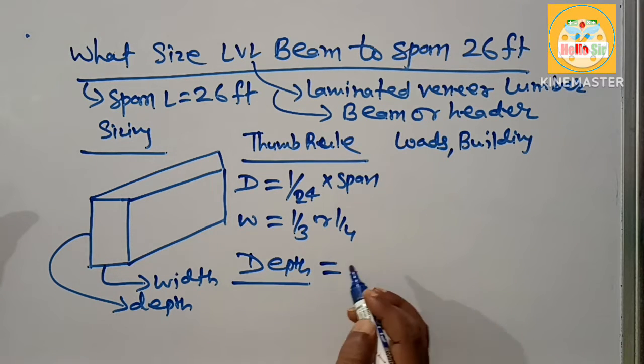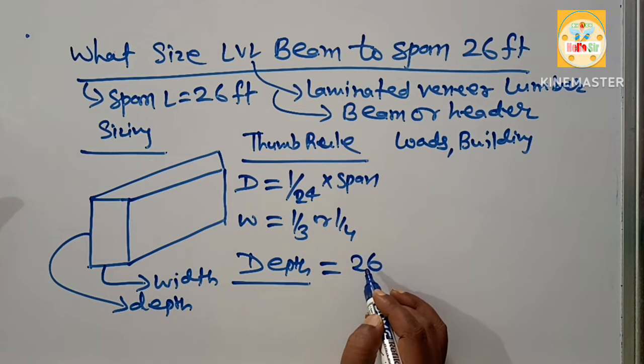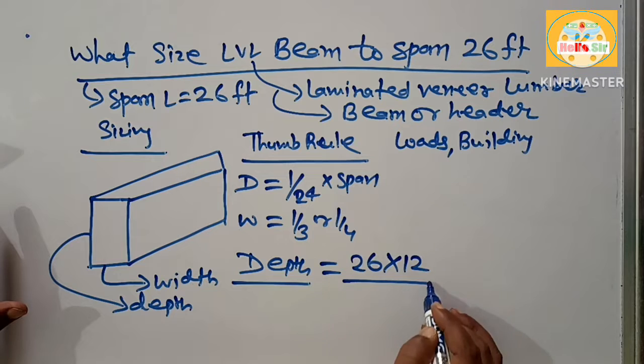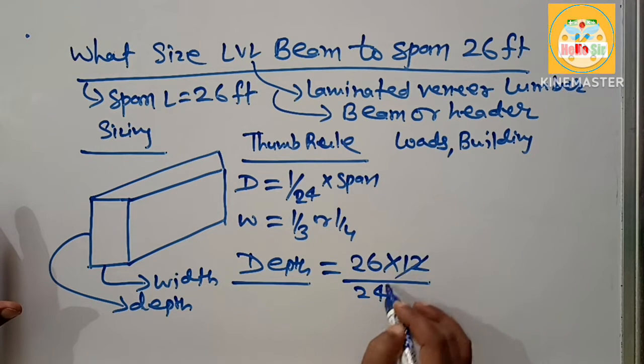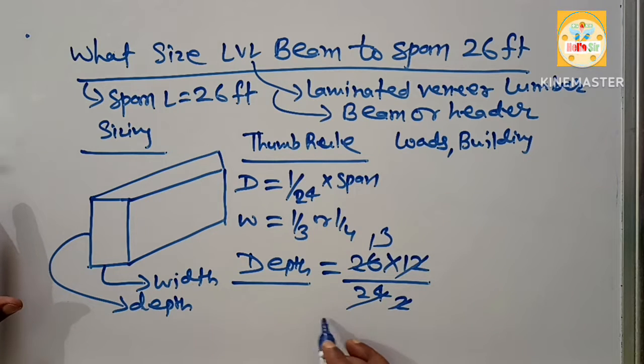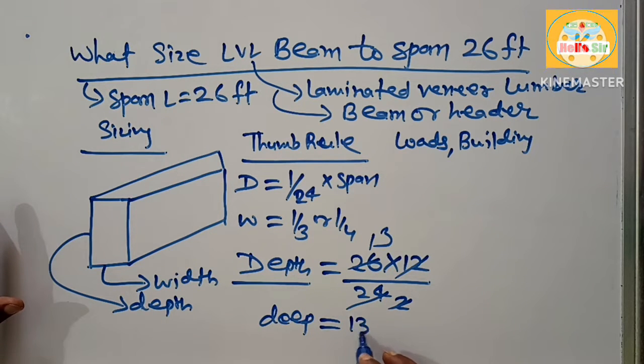The span length, 26 feet, multiplied by 12 and divided by 24 equals 13. It means the depth will be 13 inches.